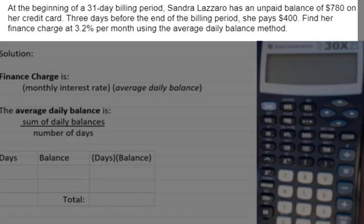At the beginning of a 31-day billing period, Sandra Lazaro has an unpaid balance of $780 on her credit card. Three days before the end of the billing period, she pays $400. Find her finance charge at 3.2% per month using the average daily balance method.